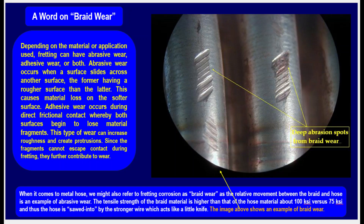A word on braid wear. Depending on the material or application, fretting can involve abrasive wear, adhesive wear, or both. Abrasive wear occurs when a surface slides across another surface, the former having a rougher surface than the latter, causing material loss on the softer surface. Adhesive wear occurs during direct frictional contact, whereby both surfaces begin to lose material fragments. This type of wear can increase roughness and create protrusions; since the fragments cannot escape contact during fretting, they further contribute to wear.